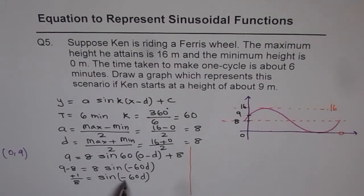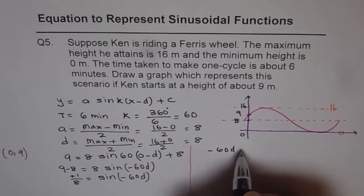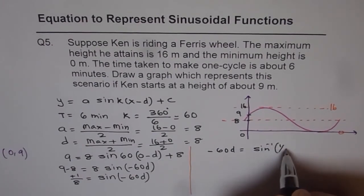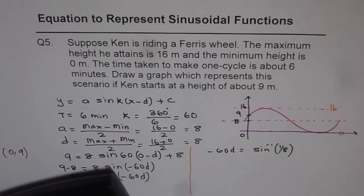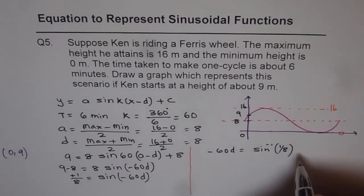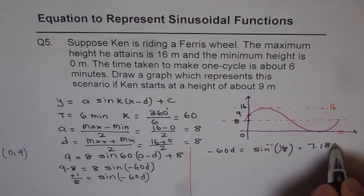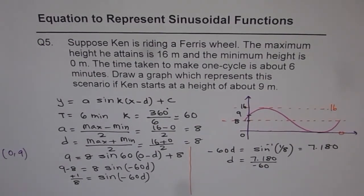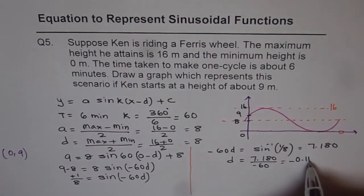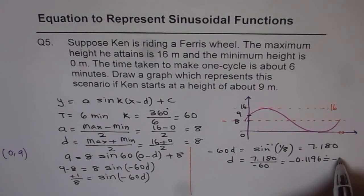Now sine inverse of 1 over 8 is minus 60d. So we can write minus 60d equals sine inverse of 1 over 8. Let us use the calculator to figure this out. So second function, sine inverse, 1 divided by 8, bracket close, equals to 7.180. Now this gives us d equals 7.180 divided by minus 60. So it is equals to negative 0.1196 which I can approximate as 0.12. So that is what I get the value of d.